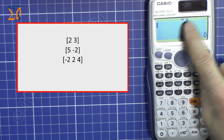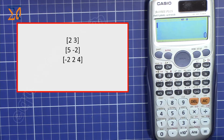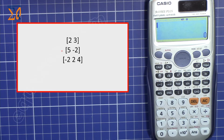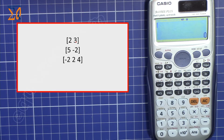You have VCT (vector) on the screen. To do a calculation with a vector, let's say we have a vector of 2 and 3 — that's an X value and a Y value, depending on your point of reference.